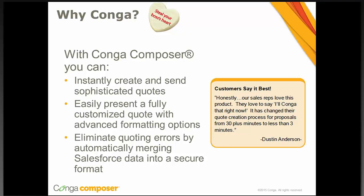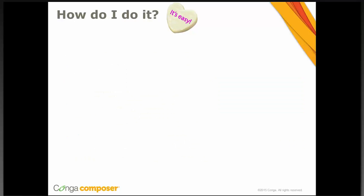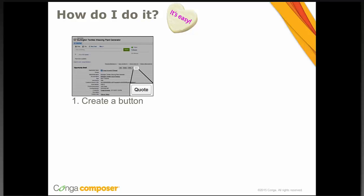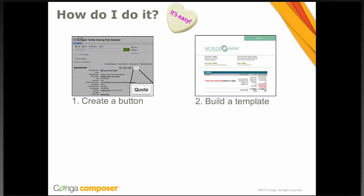I'm going to show you how to do this in four simple steps, then demo a solution I've already put in place, and then conclude with questions. So how do you put in place a quote solution? Once you've installed Conga Composer into your Salesforce org, you would create your quote solution by first creating a Conga Composer button and placing it on its page layout. The solution we're going to show you today has a button built on the opportunity object, which seems like a logical place to put a quote solution — you could also do this on the quote object. Once you've built and placed that button on the page layout, that's going to allow you to launch the Conga Composer dialog box. The second step in the process is building your template.